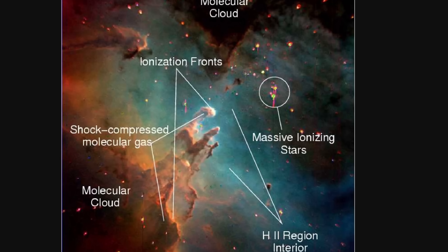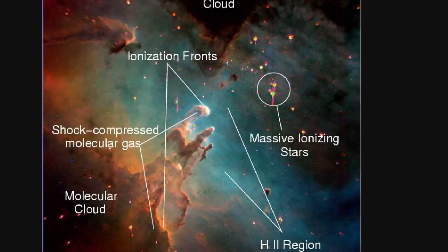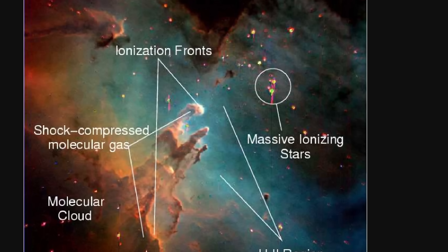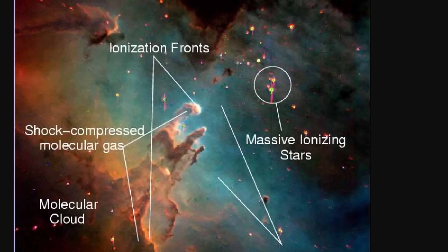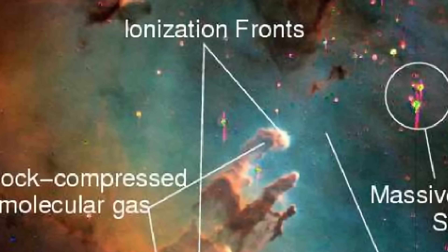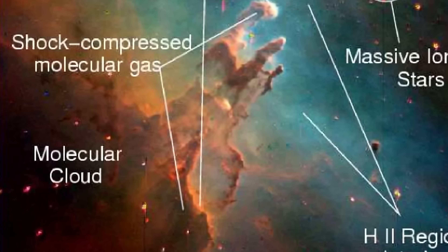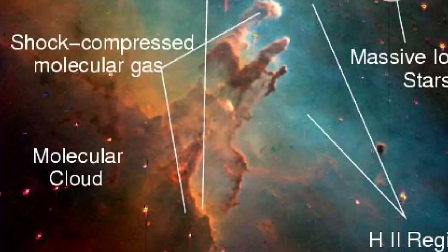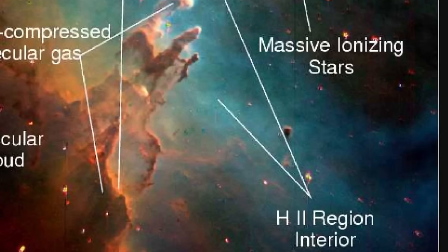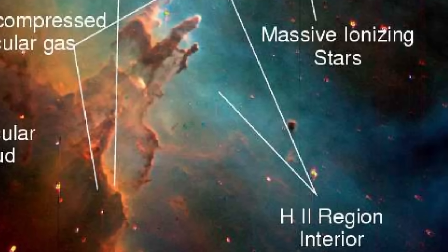For this cloud, all of this roughly looks like this. We have several massive ionizing stars a few light years away, we have the ionization fronts at the tips of the pillars, the molecular cloud behind that's not as affected by the light from the stars, and of course a lot of ionized hydrogen in between.